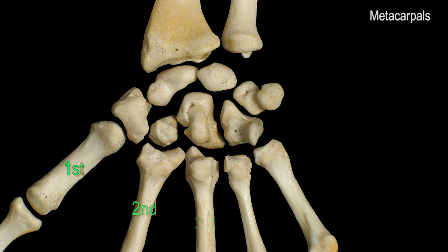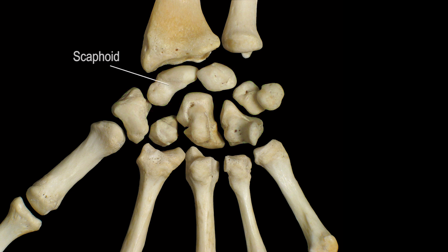The first, second, third, fourth, and fifth metacarpals are located here. We have two rows of carpals, proximal and distal. Scaphoid, lunate, triquetrum, and pisiform are in the proximal row.